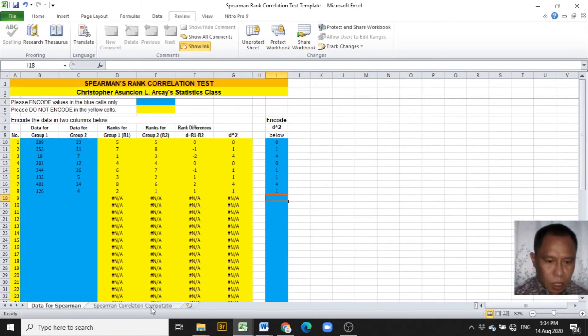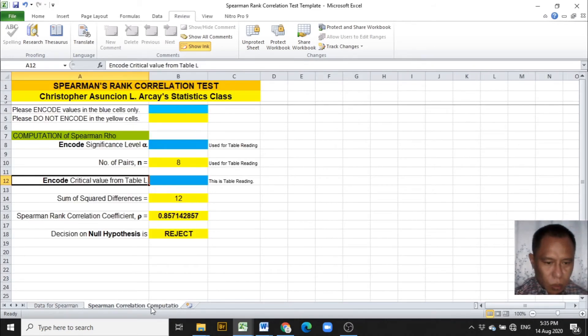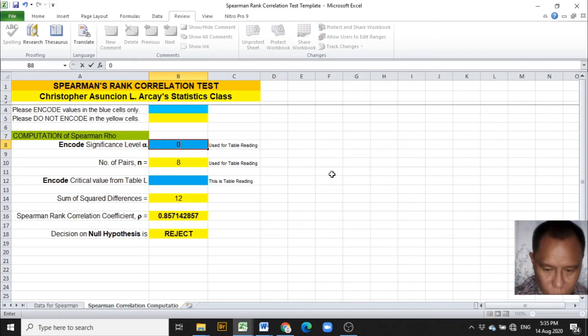Let's proceed to the computation, the worksheet on the computation of the Spearman correlation coefficient. We are asked of the level of significance given in the problem and this is 0.05.